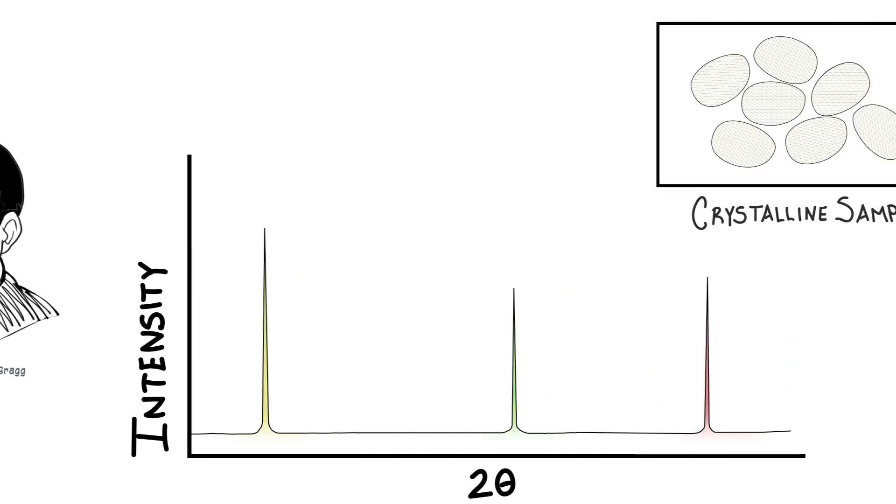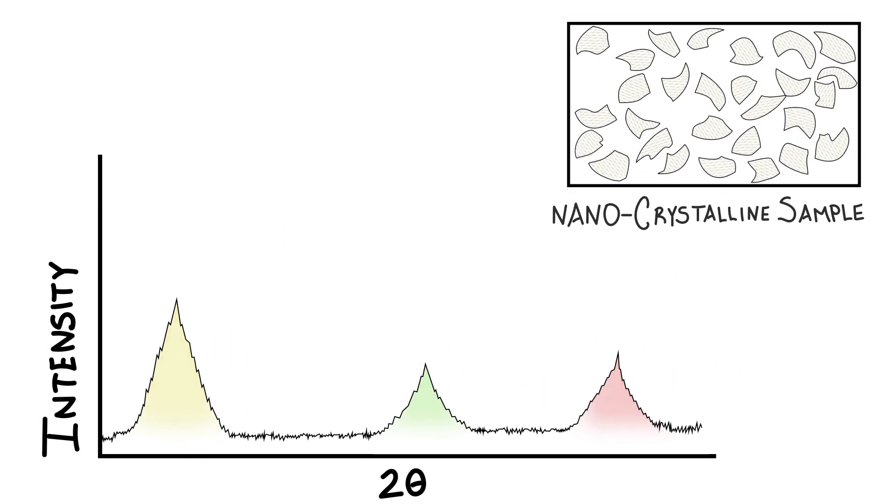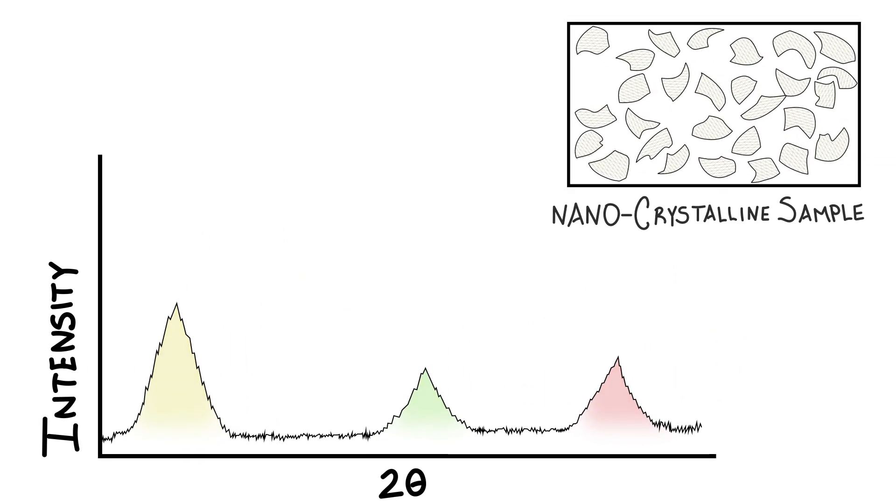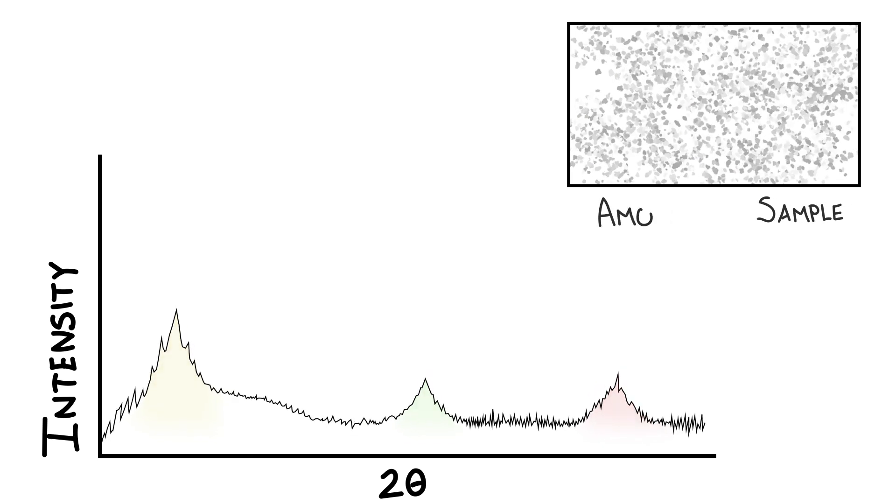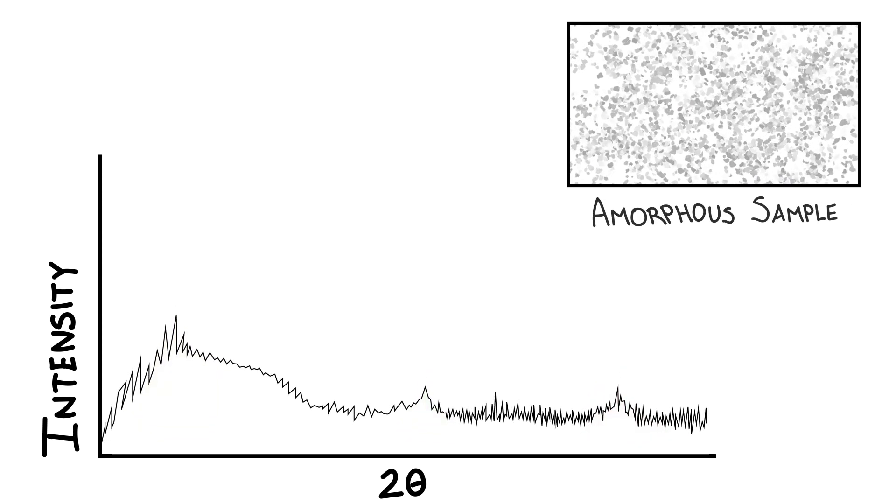Often though, samples are not perfect. Rather than micron-sized grains, crystallite size can be in the nanometer range. Rather than perfect crystals, defects disrupt the perfect structure. This breaking of long-range order leads to broadening and eventual loss of peaks entirely.